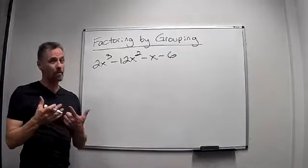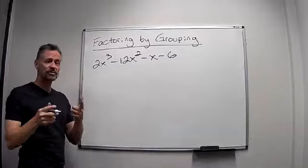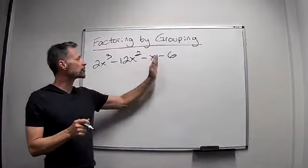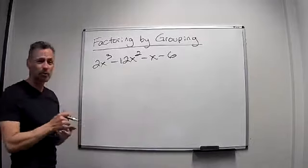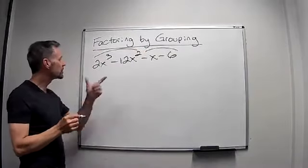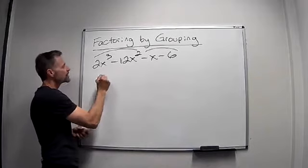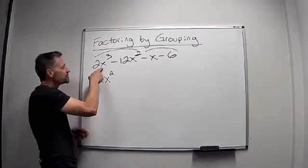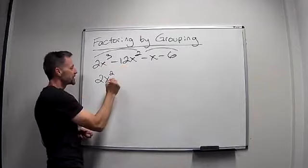Okay, so a couple things I'm going to point out on this one. We still do it the same way. We say, hey look, there's one, two, three, four terms. Let's try grouping the first two and the second two. Well in the first two I can factor out a 2x squared and that's going to leave me with an x plus 6.